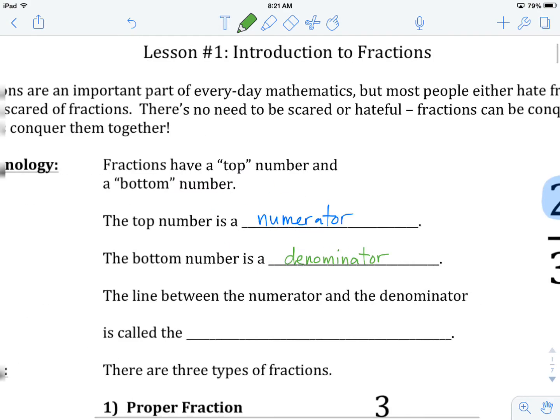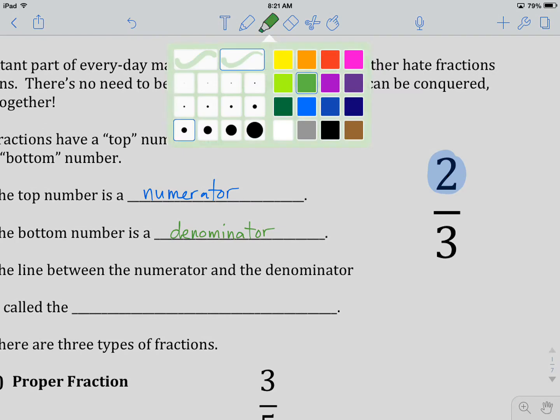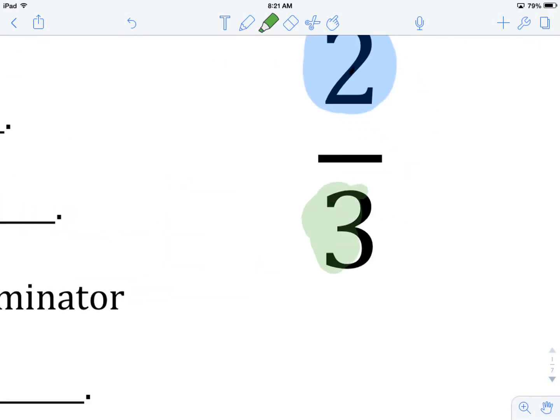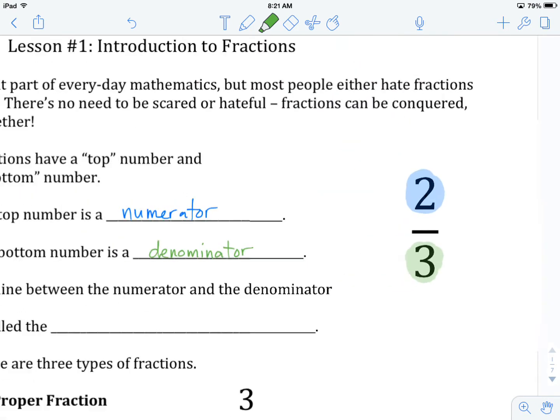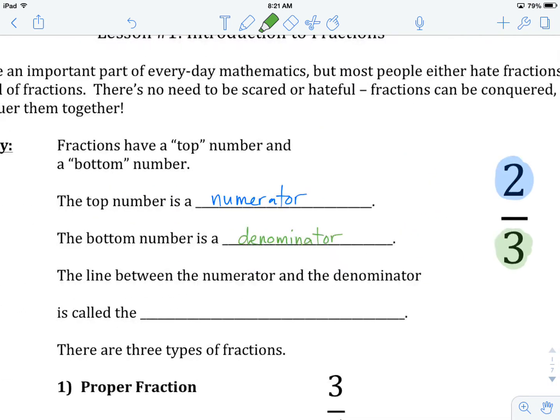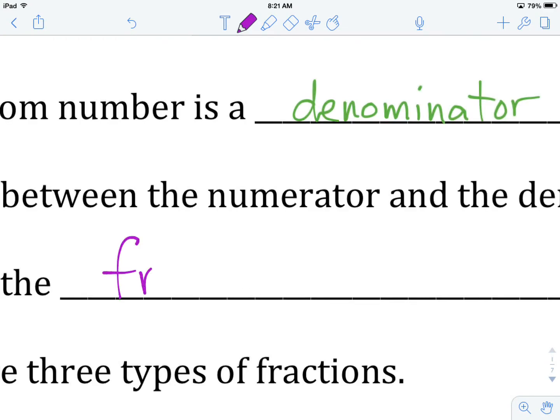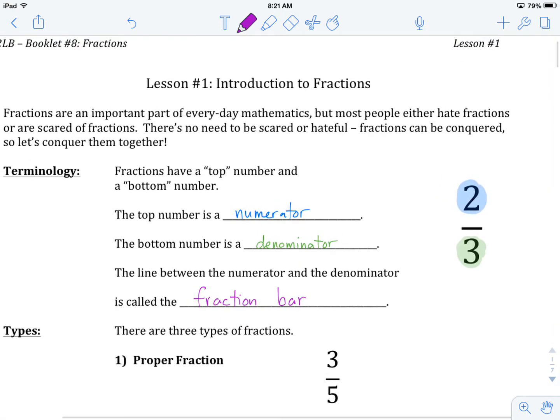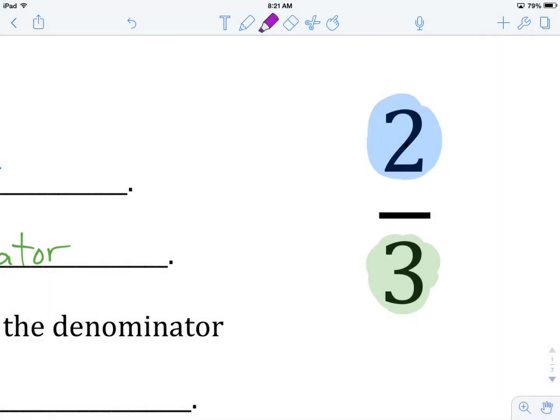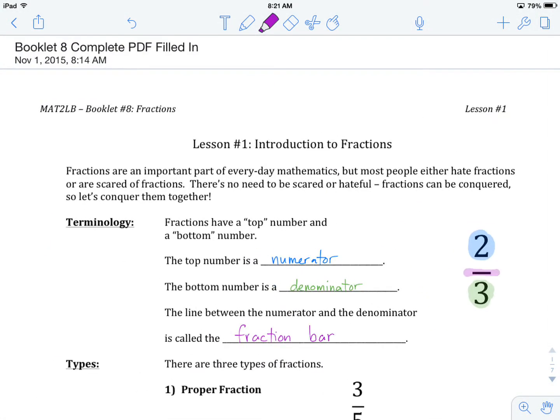The denominator is underneath the top number and underneath that line. And speaking of that line, it also has a particular name. The line between the numerator and the denominator is called the fraction bar or fraction line, but I'm going to try to use the word fraction bar when I'm working with it. So there's our fraction bar that splits up the numerator and the denominator. So that's our terminology: numerator, number on the top; denominator, number on the bottom; fraction bar, the line that goes between them.